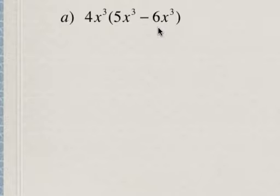And here, 5x cubed minus 6x cubed is an operation you can do because these are two like terms. So when we subtract 5 minus 6, that's negative 1, so 5x cubed minus 6x cubed is negative 1 or negative x cubed.